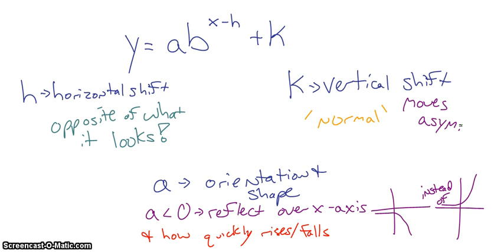So, y is going to be greater than, in that case, 2. And A still controls our orientation and shape. So, if it's less than 0, we are reflecting over the x-axis. So, everything is going to be below instead of above. And it also tells us how quickly it rises or falls.